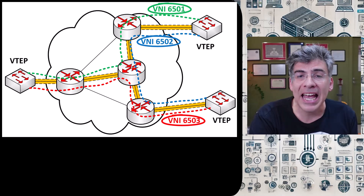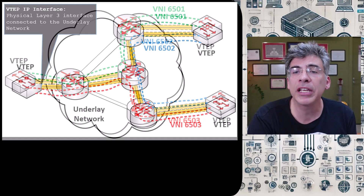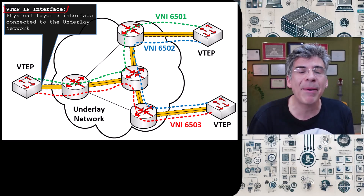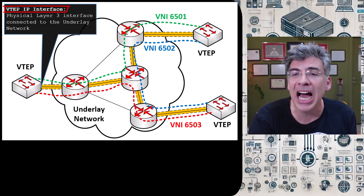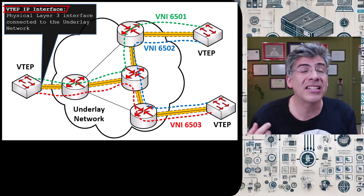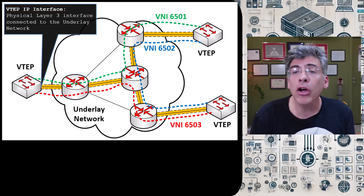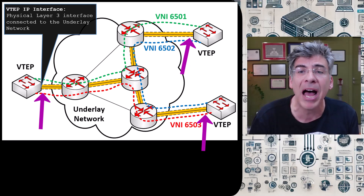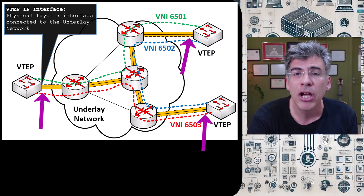Each VTEP will have two interfaces involved in the process of tunneling. The first is the VTEP IP interface, which is the physical interface to which the underlay network is connected. This is a layer 3 physical interface assigned an IP address on the underlay network. As long as IP connectivity is available between VTEP IP interfaces, then we can have VXLAN connectivity.